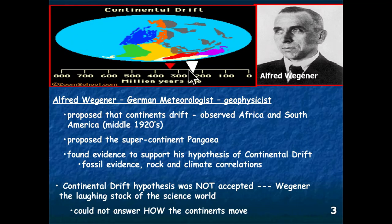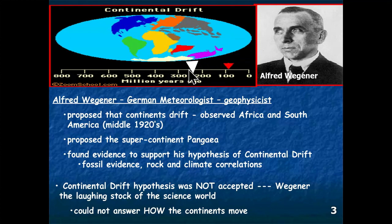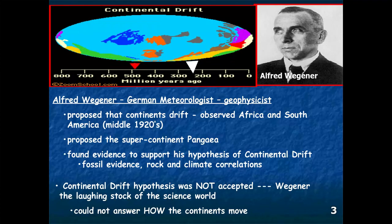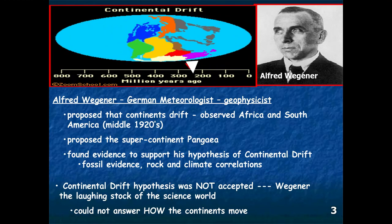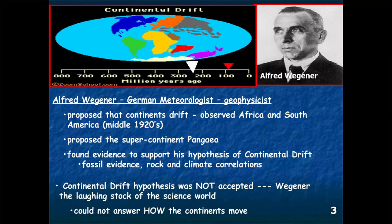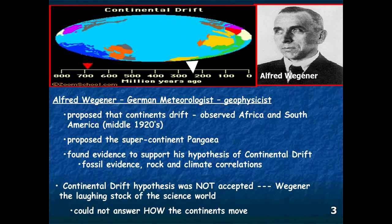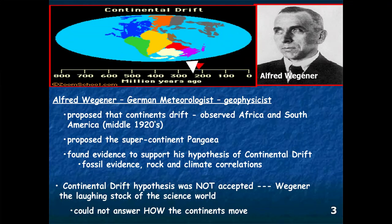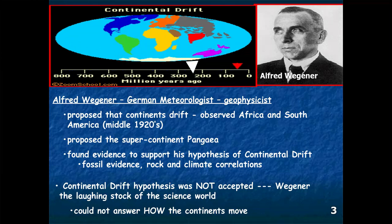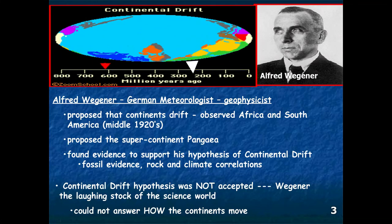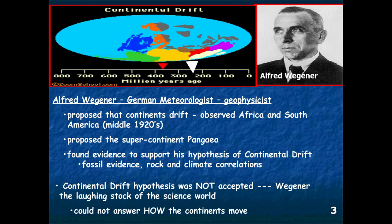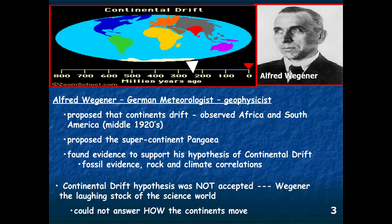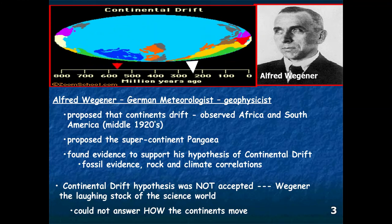By the mid- to late 1920s, Alfred Wegener took his evidence and his continental drift hypothesis and presented it to the science symposium. It was not very well accepted. In fact, Alfred Wegener became the laughingstock of the science world. One of the key questions that arose was that he couldn't explain how the continents moved, and so most scientists at that point didn't accept the continental drift hypothesis.